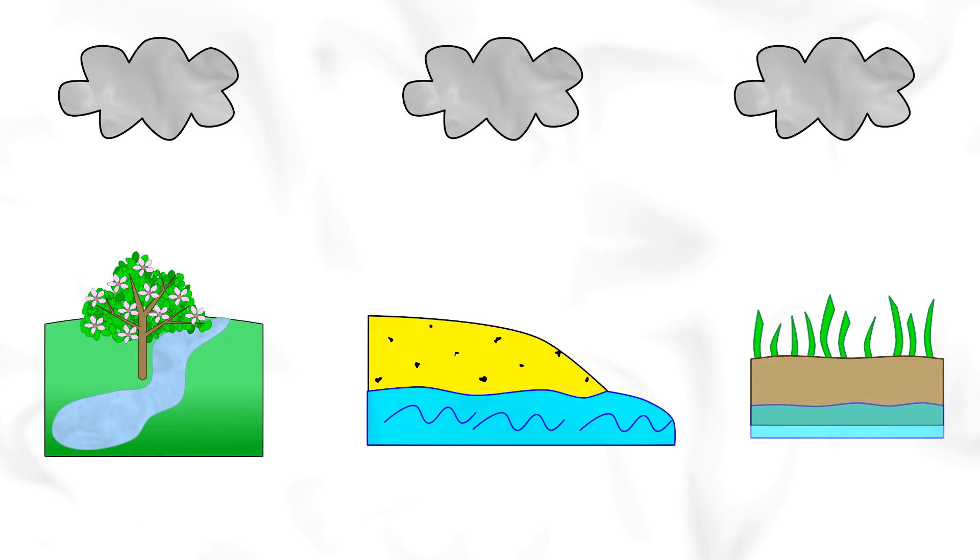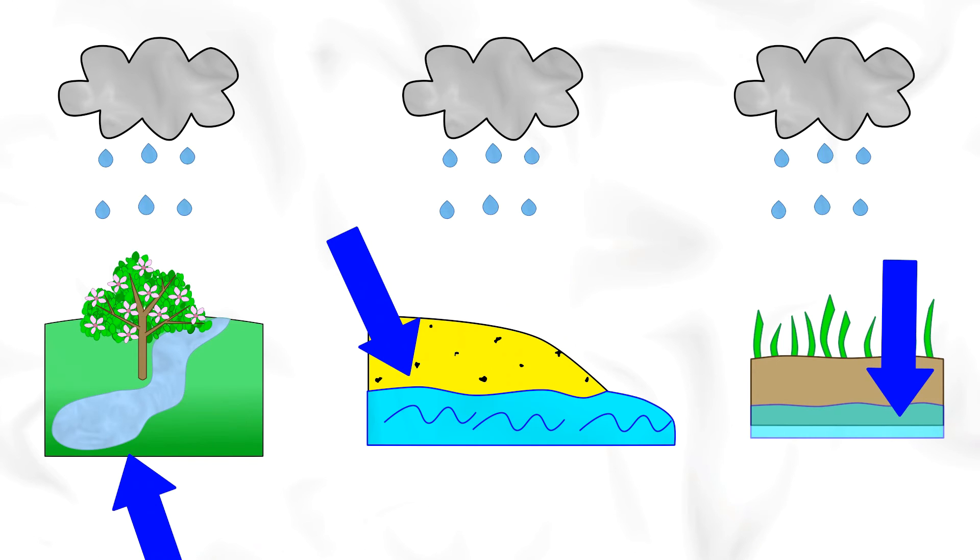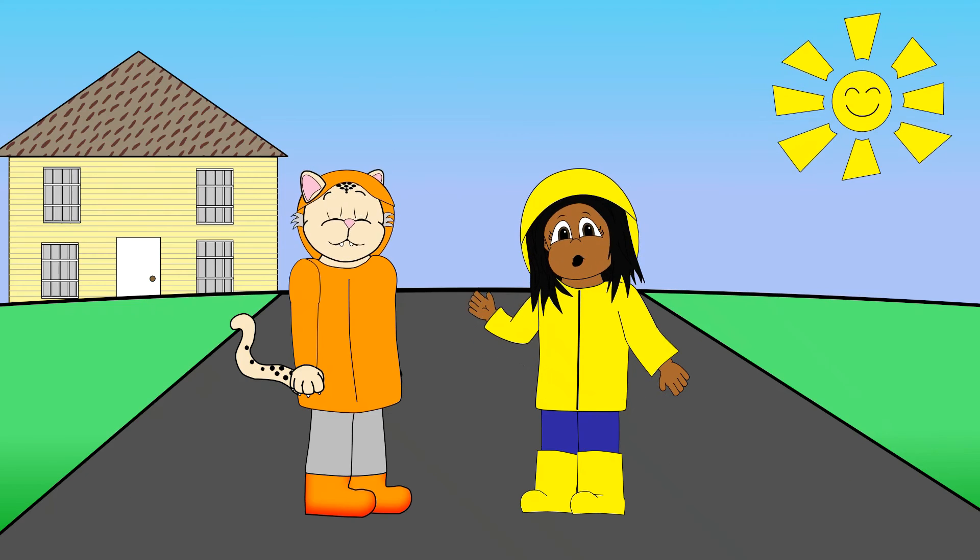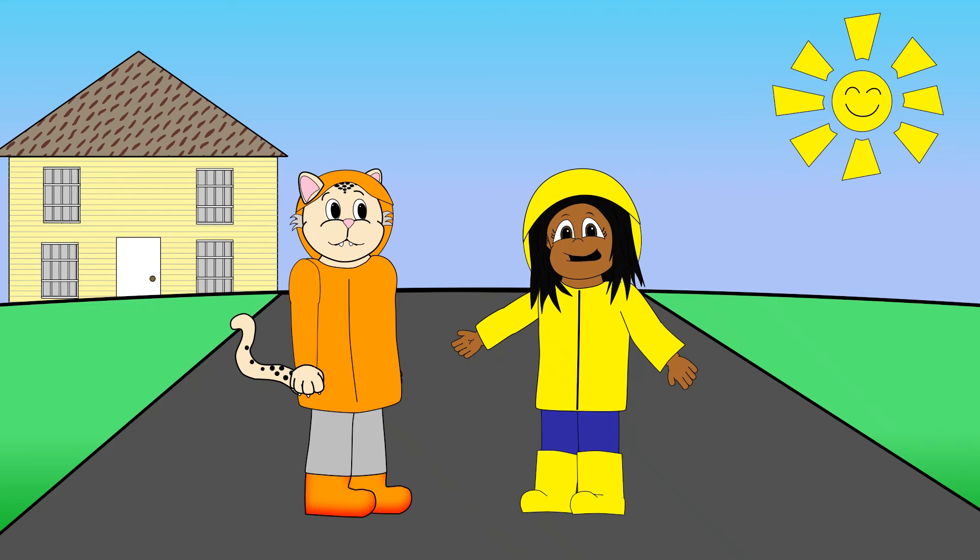There is even water underground called groundwater. This is called collection. It's called collection because the water collects in different places. Now you know some parts of the water cycle!